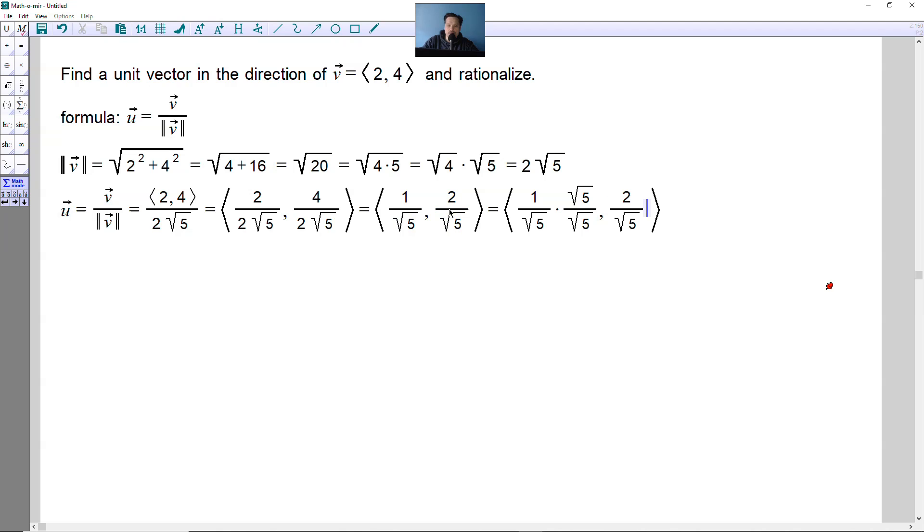So you're going to take the second one and you're going to multiply by this root of 5 over the root of 5. Remember the root of 5 over the root of 5 is just 1. And then you simplify this a little bit. So for this part right here that I've highlighted, 1 times the root of 5 is root 5, but on the bottom you would have the root of 5 times the root of 5, which is just 5 positive.